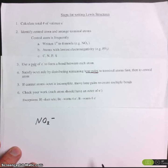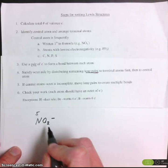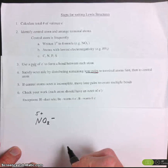Calculate the total number of valence electrons. Nitrogen is in group 5. It has 5 valence electrons.